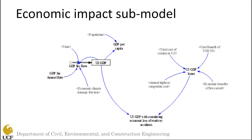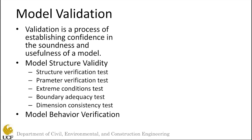The next sub-model is the economic impact sub-model. This model connects all of the sub-models mentioned before and connects them to the economy. Each of the economic parameters discussed has some impact on GDP, and GDP will be combined to show the overall impact.